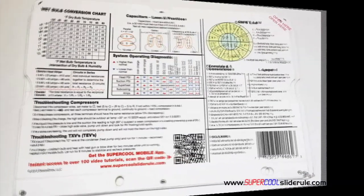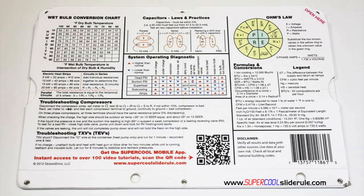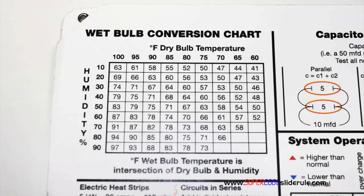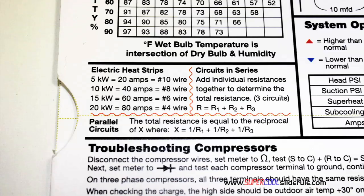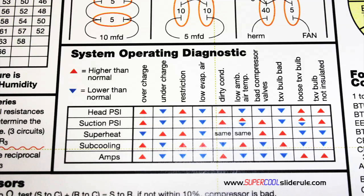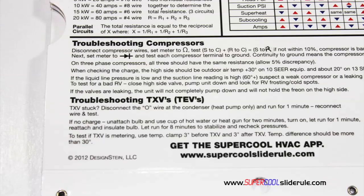The back cover contains required formulas. It has capacitors rules and practices, a wet bulb conversion chart, how to perform computations on series or parallel circuits, an electric heat strip guide, a complete system troubleshooting diagnostic chart, and how to troubleshoot compressors in TXV.